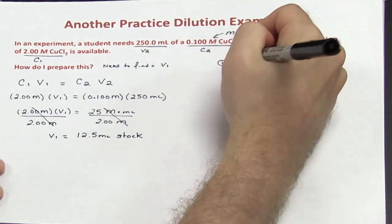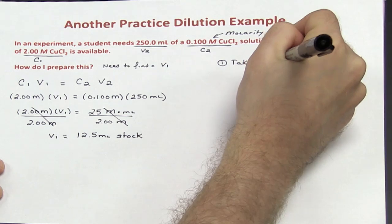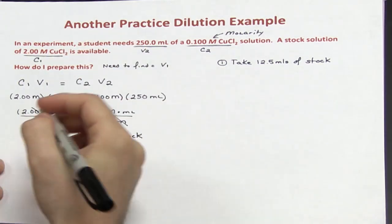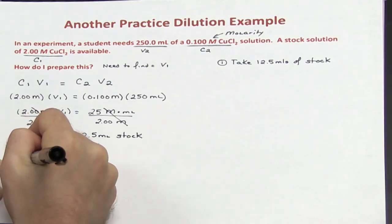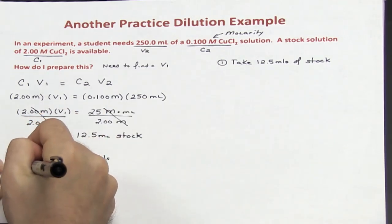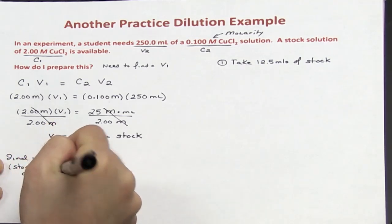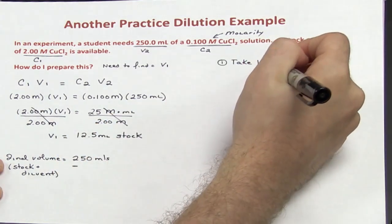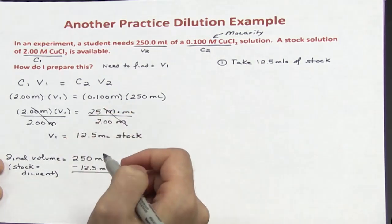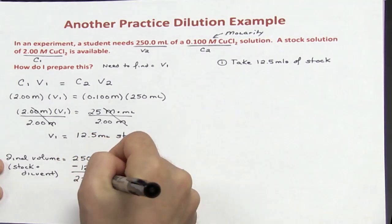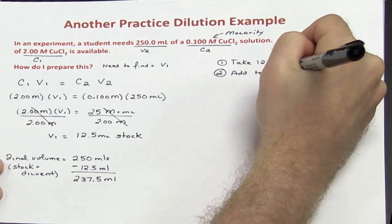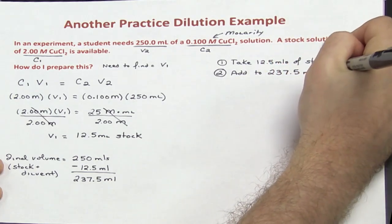How do I prepare this? Step 1: take 12.5 mL of the stock solution, which was at 2 molar copper chloride. Now I need to figure out how much diluent to use. The final volume is supposed to be 250 mL, and that includes both the stock plus the diluent. So from 250 mL, I subtract 12.5 mL to get 237.5 mL. Step 2: add 237.5 mL of diluent.